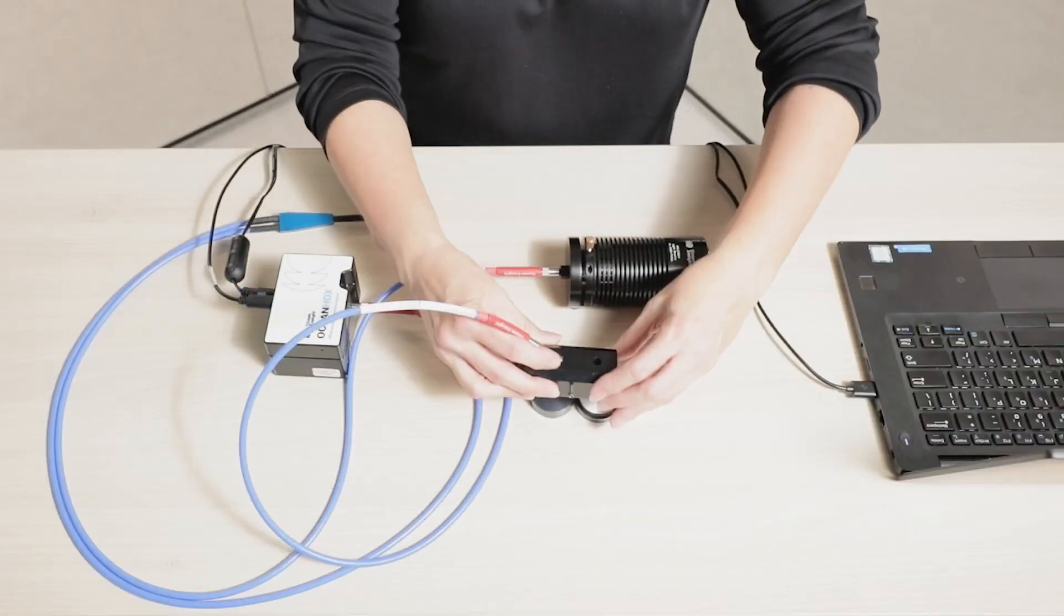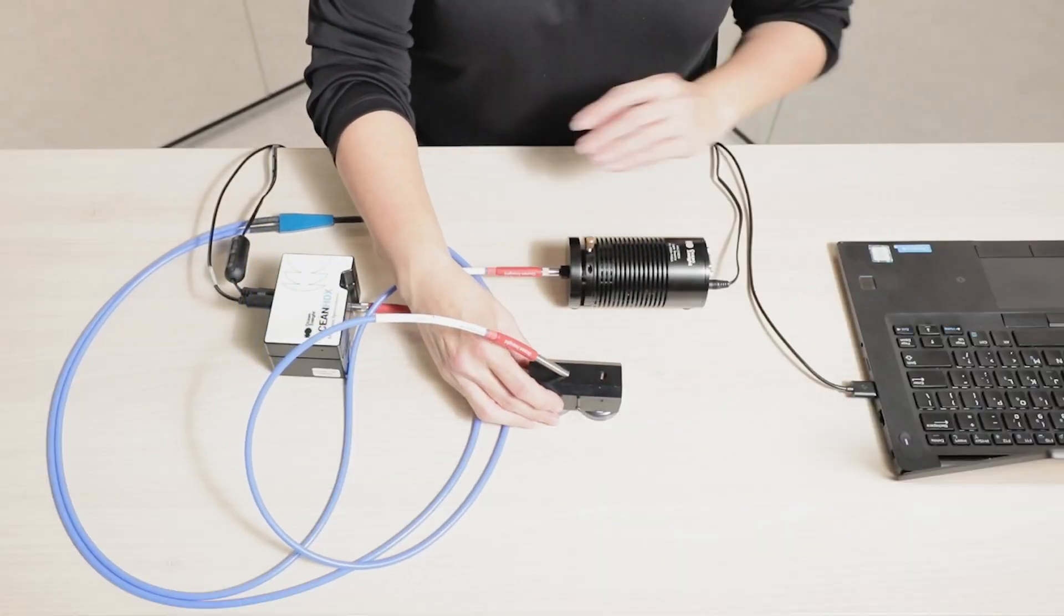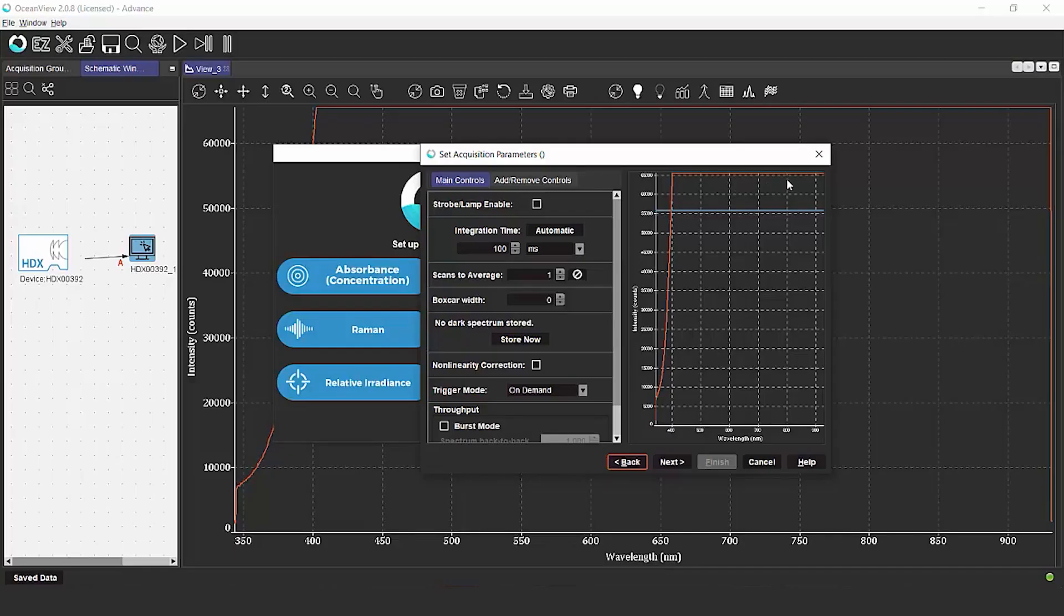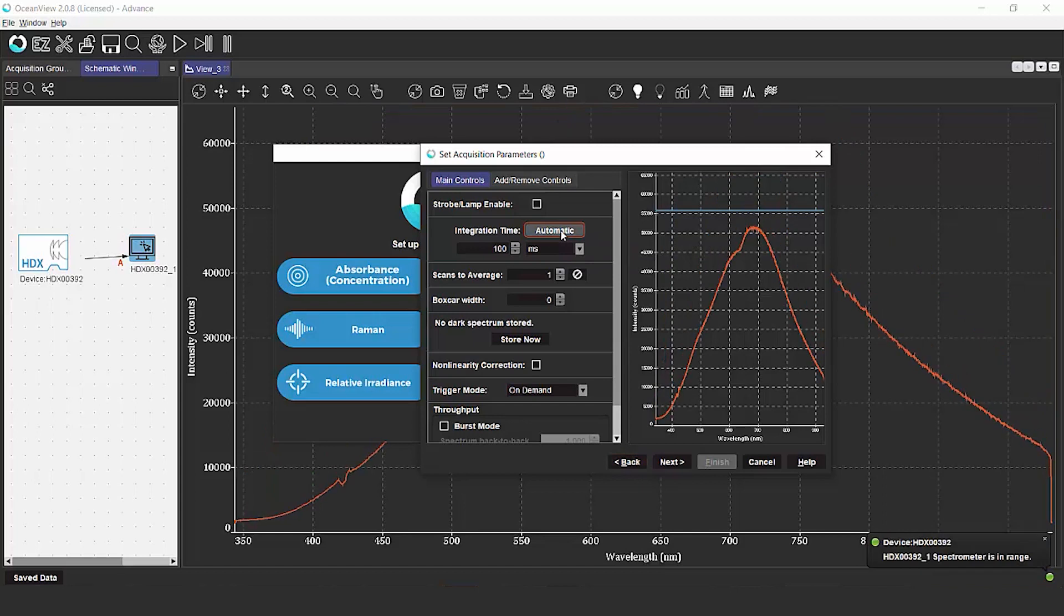So what we're going to do is adjust our integration time to get that spectrum into the ideal range for our measurements. To do that, we're going to place the probe onto our reflection standard. So we're going to click the automatic button to help us get our integration time. It will set it automatically for us just below that blue line. This is going to give you your best performance.